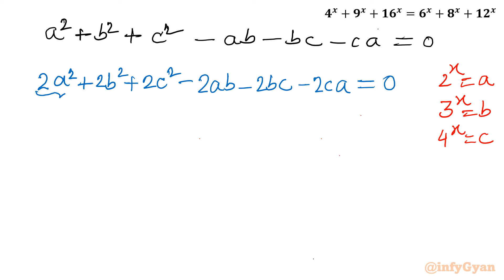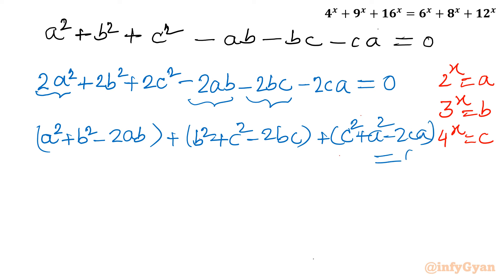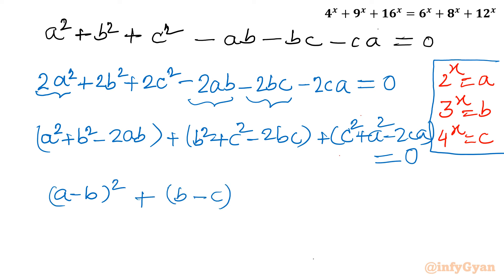I can split 2a² as a² + a², and similarly for the other terms, so I write: (a² + b² − 2ab) + (b² + c² − 2bc) + (c² + a² − 2ca) = 0. The first bracket is (a−b)², the second is (b−c)², and the third is (c−a)².